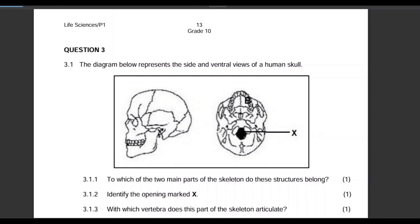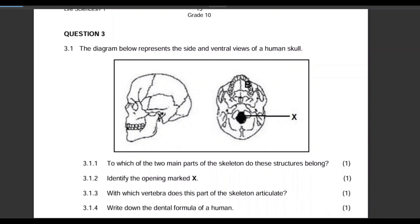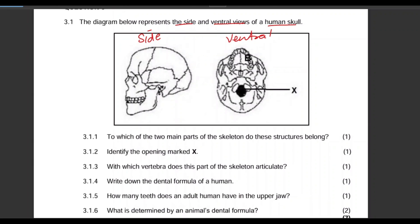Let's look at the question without wasting time. The diagram below represents the side view and the ventral view of the human skull. This is the side view and this is the ventral view of the human skull. We are given X as one of the labels.